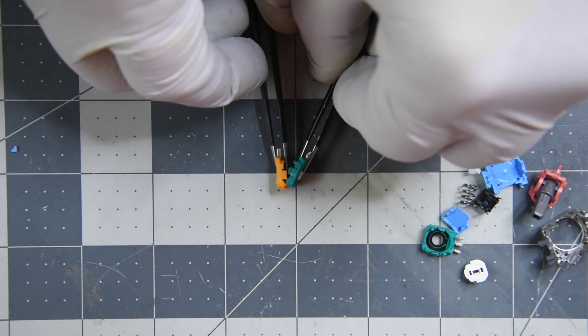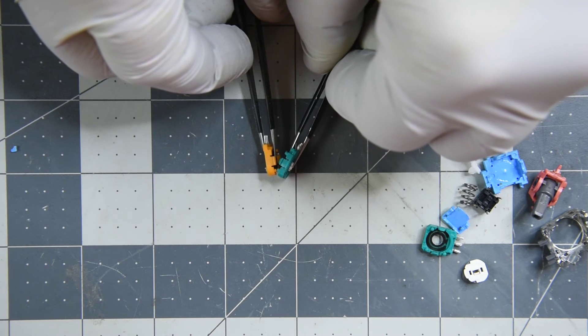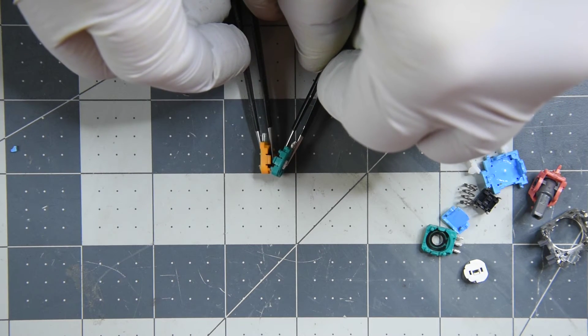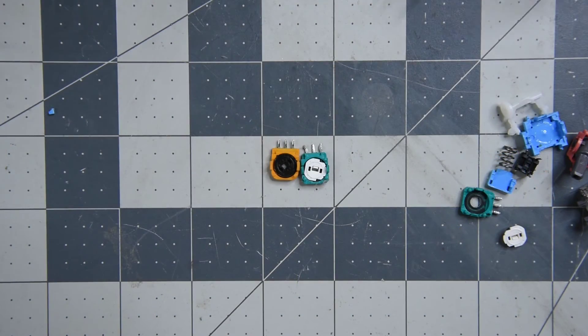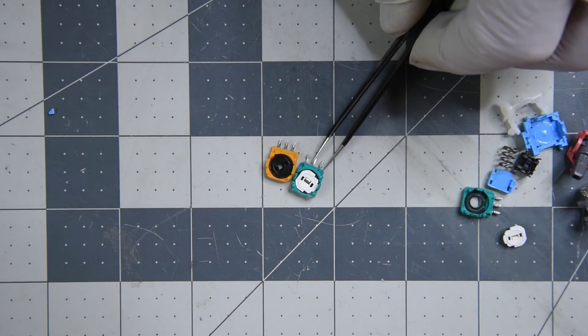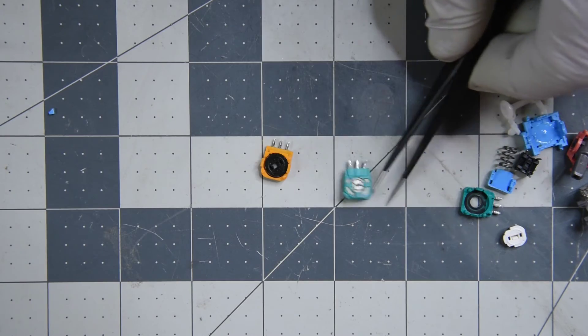You can see here why the potentiometers are not interchangeable. There is quite a bit of difference in the tabs that hold them to the joystick frame. And while it's quite hard to see, the opening for the shaft is quite a bit smaller on the Alps potentiometer.